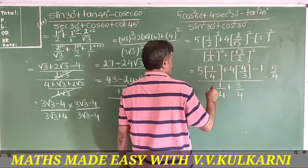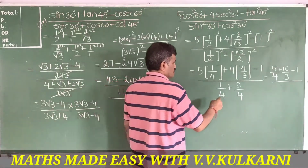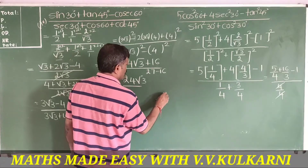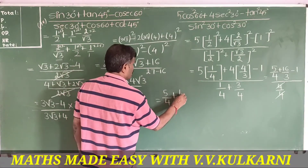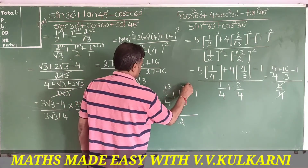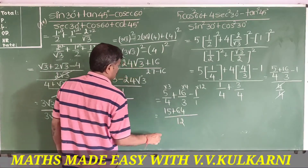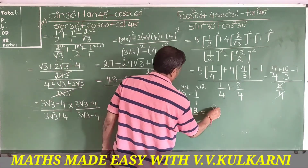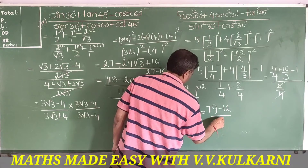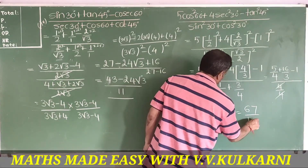This simplifies to 5/4 plus 16/3 minus 1. Taking LCM of 12: that gives 15 plus 64 minus 12, all over 12. The denominator sin²30 plus cos²30 equals 1. So 15 plus 64 is 79, minus 12 is 67, divided by 12. The final answer is 67/12.